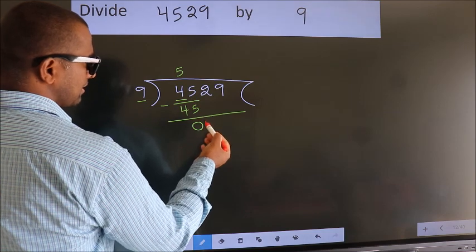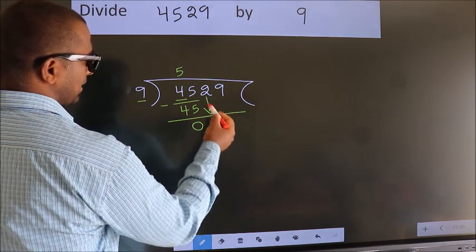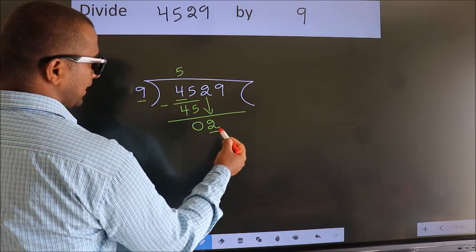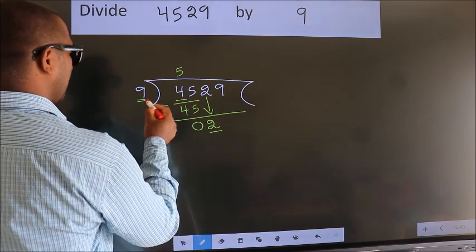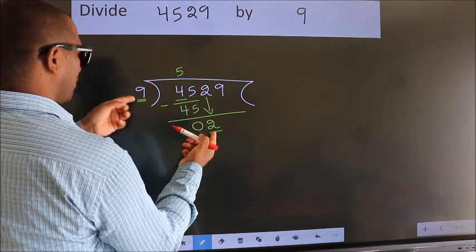After this, bring down the next number, so 2 comes down. Here we have 2, here 9. 2 is smaller than 9.